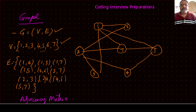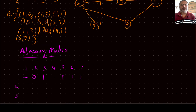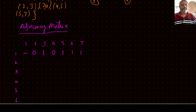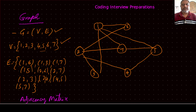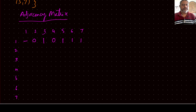Node 1 is connected with 3, 5, 6, and 7. Node 1 and 2 are not connected, and 1 and 4 are not directly connected. For node 2: it is connected to 3, 4, 6, and 7. Node 2 is also connected to 1, while 2 and 5 are not directly connected.